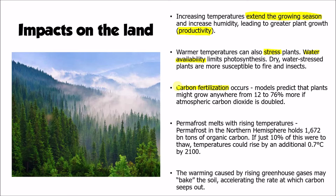By having greater concentrations of carbon dioxide in the atmosphere, plants grow more quickly. Some models predict that plants might grow anywhere between 12% and 76% more if we doubled the atmospheric concentrations of carbon dioxide above pre-industrial levels. However, we also need to take into account that as temperatures rise, those rates of photosynthesis can decrease. There are some other impacts on the land as well.